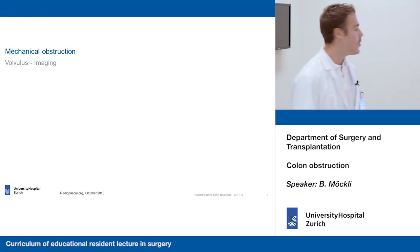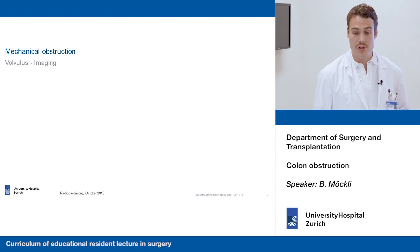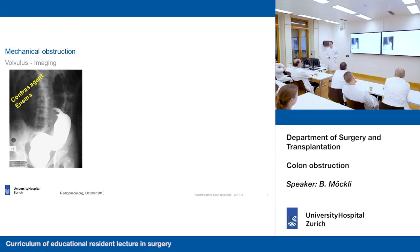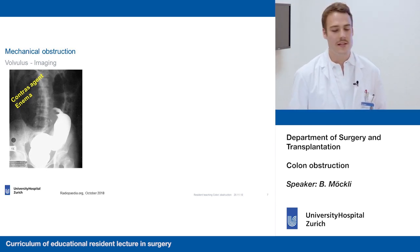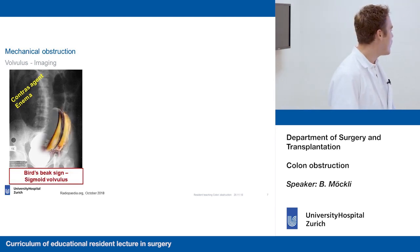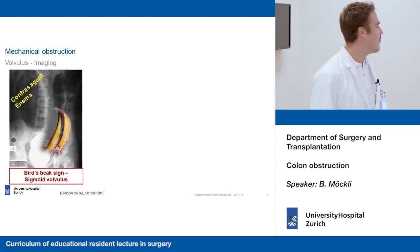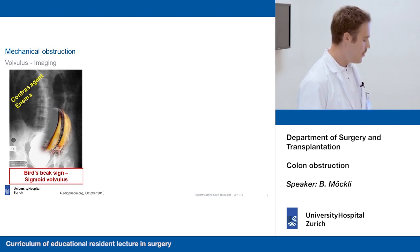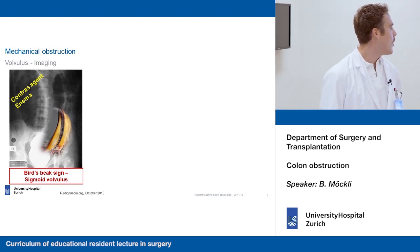I'd like to go over some typical imaging pictures for colonic obstruction and volvulus. Here's the first one on this barium enema. Does anyone have an idea what that could represent or how this sign is called? What you can see here is actually a birchbeak sign — that's how the sign is typically called. We can see the barium rising up, but the twisted sigmoid that doesn't let the contrast through, also illustrated here by a birchbeak.